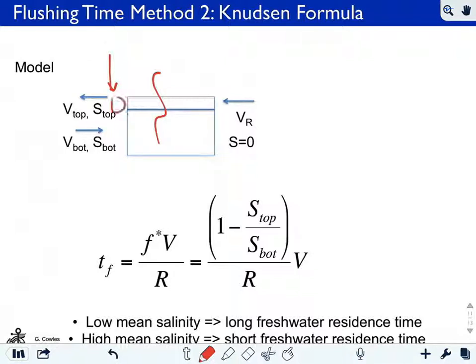So we have these two distinct layers, and we're going to require knowing the information of what is the salinity of the upper layer and what is the salinity of the bottom layer, S top and S bottom. Now we can express our fresh water fraction in terms of S top and S bottom.